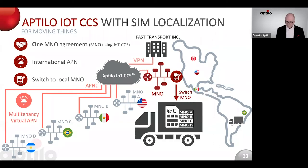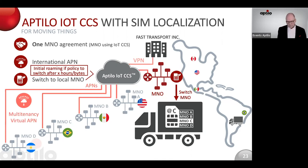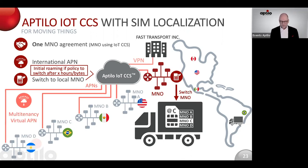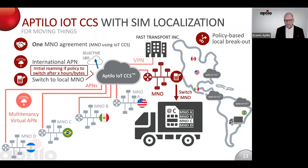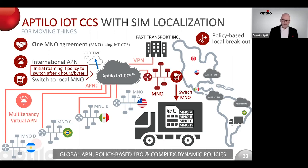And now you switch to the local operator in Brazil. Note that you may have initial roaming if the policy is set to switch the operator after X hours, or X number of bytes, or something like that. So initially you may roam, and then you switch the operator. And you can do policy-based local breakout through the implementations we have in the Aptilo IoT CCS.